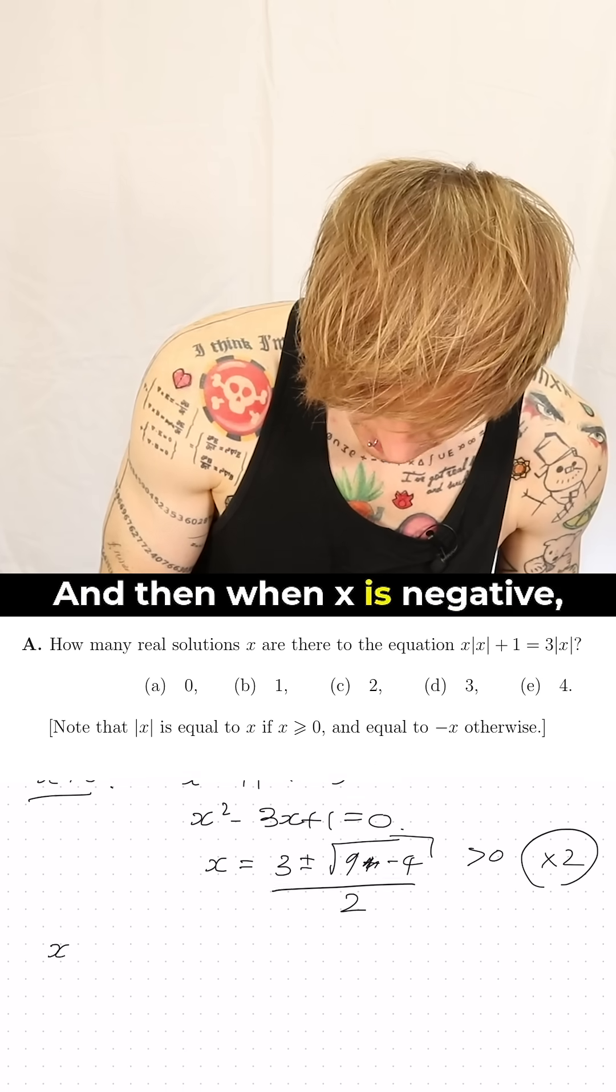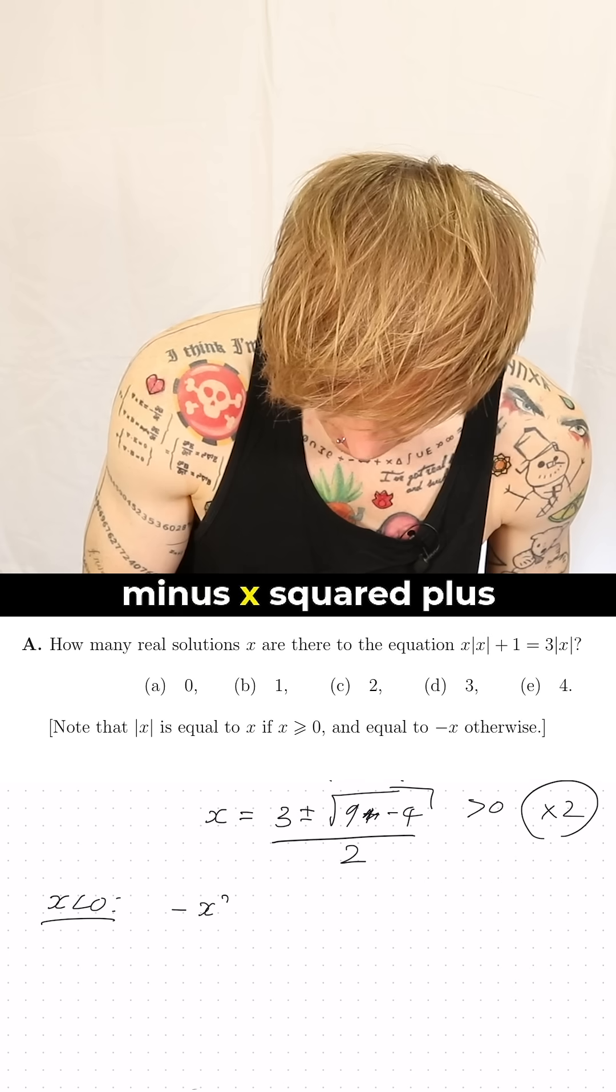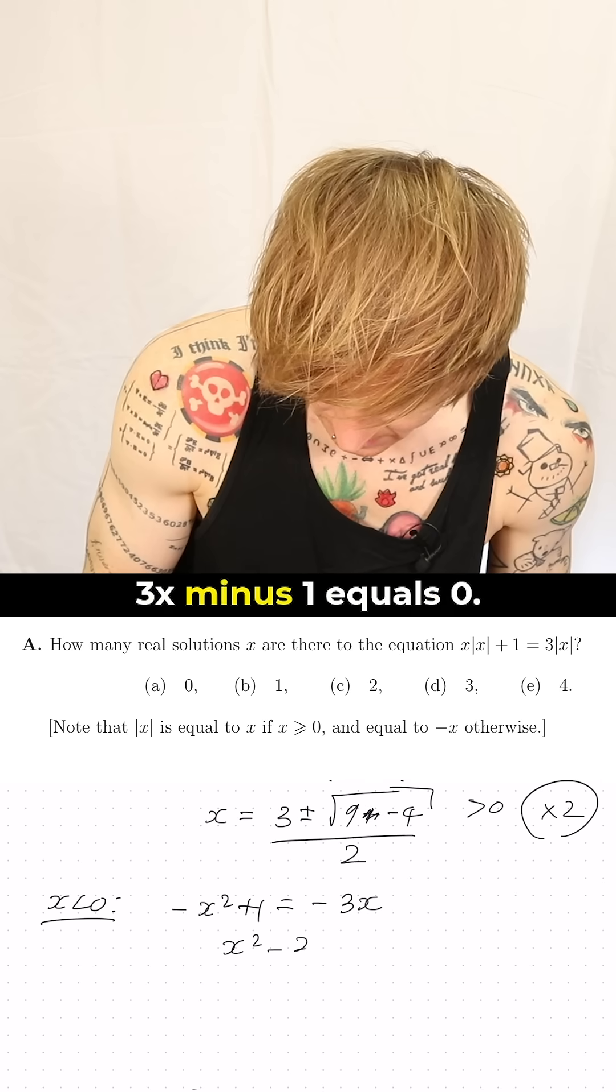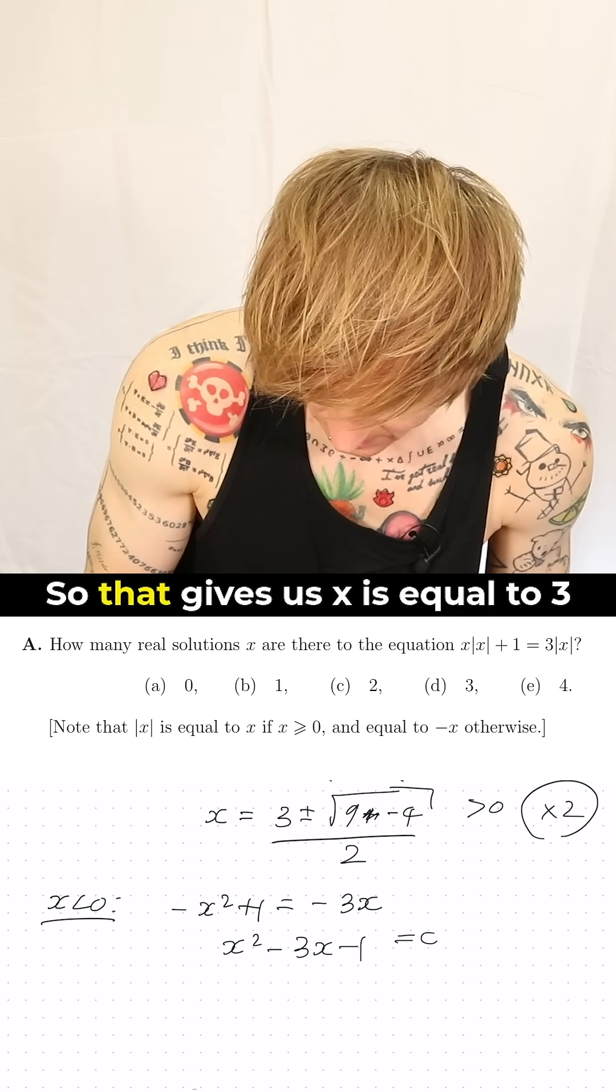And then when x is negative, minus x squared plus 1 equals minus 3x, so that's x squared minus 3x minus 1 equals 0.